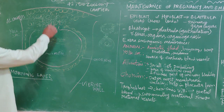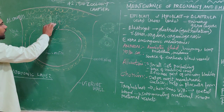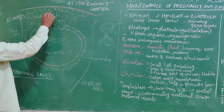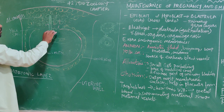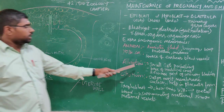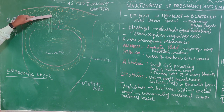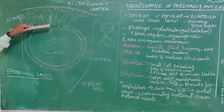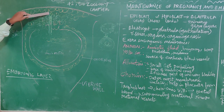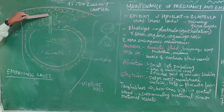The allantois forms the umbilical cord — the top coat. The allantois is a small outpocketing in the uterus. It forms the base of the umbilical cord. The umbilical cord is the connection between the fetus and the mother. The allantois is also related to the urinary bladder.